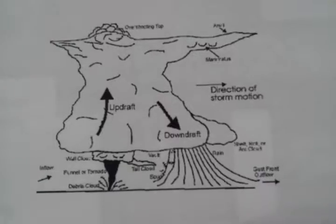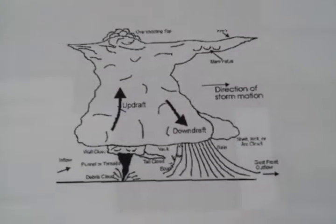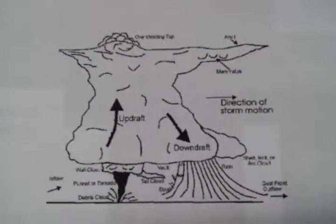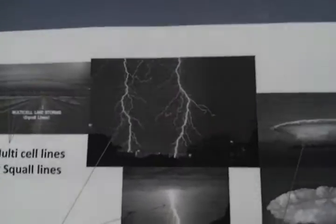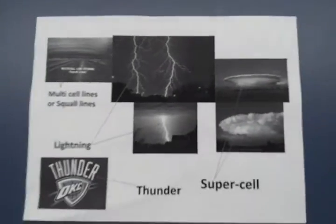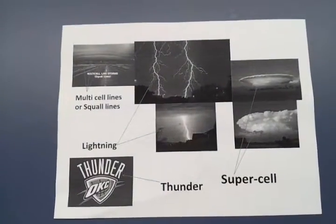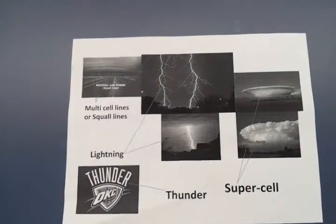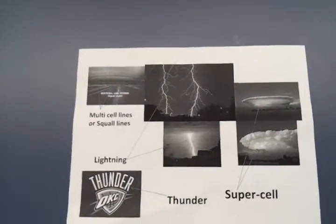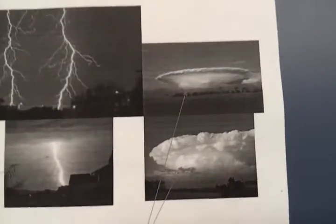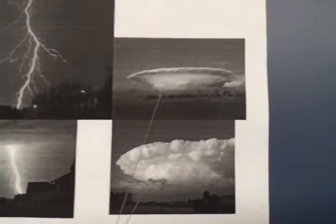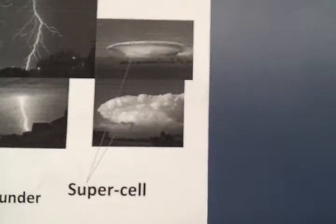Stronger thunderstorm cells can lead to tornadoes and waterspouts. There are four types of thunderstorms: single cell, multi-cluster, multi-cell lines, and supercells. Supercell thunderstorms are the largest and strongest and most associated with severe weather phenomena.